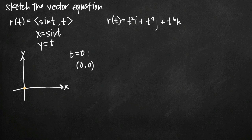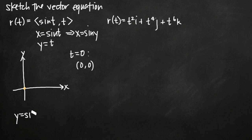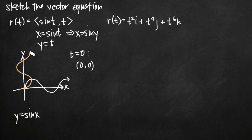From here, the easiest way to sketch my curve is to eliminate the parameter and get an equation only in terms of x and y. In this case, that's straightforward because y equals t, so I can substitute y in for t in the equation for x. That gives me x equals sine of y. Now, remember that when we have y equals sine of x, our sine curve oscillates back and forth across the x-axis. When I have x equals sine y — when I flip the variables — I'm going to flip the graph.